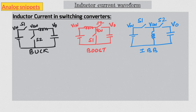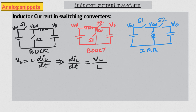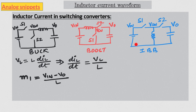Let's start with the equations of ramp-up and ramp-down slopes in all three converters. The fundamental equation is V_L = L·dI/dt, where V_L is the voltage across the inductor and I_L is the inductor current. The inductor current slope is simply dI/dt, which is voltage across the inductor divided by the inductor value. During T-on, the voltage across the inductor in a buck is V-in minus V-out, so the rising slope is (V-in − V-out)/L. For boost and IBB, the voltage across the inductor during T-on is simply V-in, so the rising slope is V-in/L.